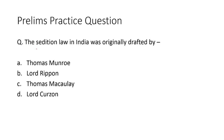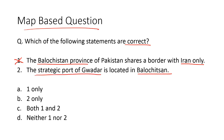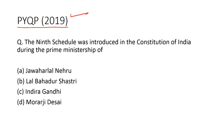The third question: The sedition law in India was originally drafted by Thomas McCauley — option C is the right answer. For the map-based question: The Balochistan province of Pakistan shares a border with Iran only — this is a wrong statement. The strategic port of Gwadar is located in Balochistan — this is a correct statement, so option B is the right answer. For a practice question from the 2019 prelims paper: The Ninth Schedule was introduced in the Constitution during the prime ministership of Jawaharlal Nehru — option A is the right answer.